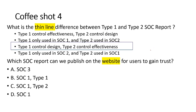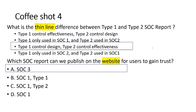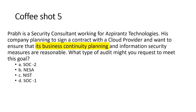Question 5: Which SOC report can be published on a website? The keyword is 'website' — accessible to everyone to gain trust. SOC 1 Type 1, SOC 1 Type 2, and SOC 1 are detailed financial reports we can't publish on a website. The report published on a website to give a high-level overview of compliance is SOC 3. It's like visiting a facility and seeing the organization is ISO 27001 certified. Answer: SOC 3.